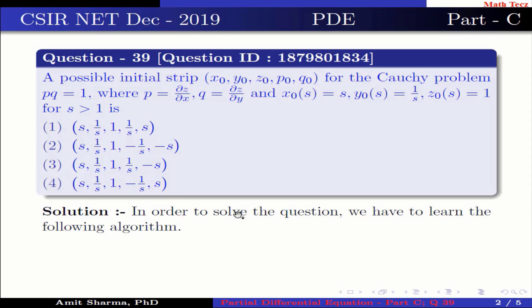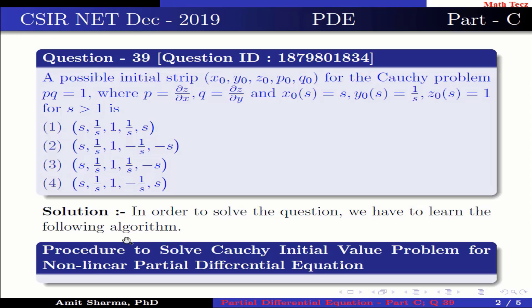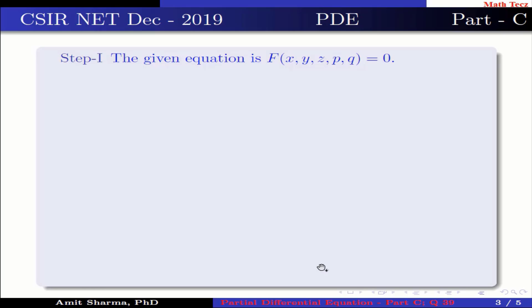In order to solve the question, we have to learn the following algorithm — the procedure to solve a Cauchy initial value problem for a non-linear partial differential equation. Step 1: the given equation is f(x, y, z, p, q) = 0.